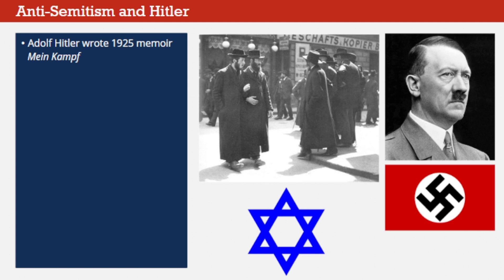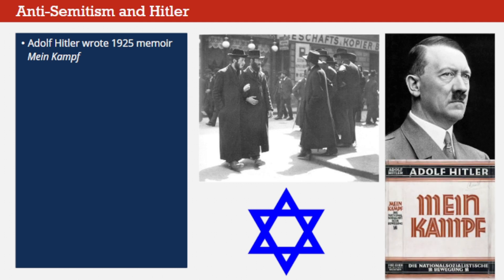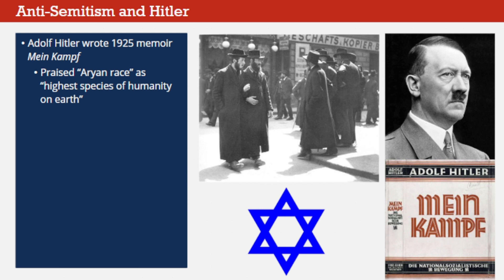Adolf Hitler wrote openly of this belief in his 1925 memoir, Mein Kampf, which was published well before his Nazi Party gained control of Germany's government. Hitler praised the Aryan race—Northern Europeans known for physical characteristics like blond hair and blue eyes—as the highest species of humanity on earth. If the Aryan race was the highest racial ideal for Hitler, Jews were the lowest. He considered them an almost subhuman group, the cause of all Germany's problems.